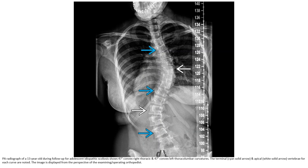PA radiograph of a 13-year-old during follow-up of adolescent idiopathic scoliosis showing a 47-degree right thoracic and 47-degree left thoracolumbar curvature. The terminal and apical vertebrae of each curve are noted. The image is displayed from the patient's perspective, meaning the left side corresponds to the patient's left.